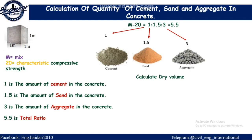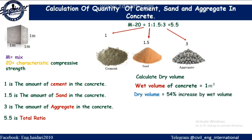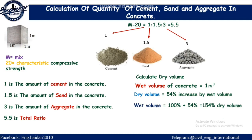Calculate dry volume. Wet volume of concrete = 1 cubic meter. Dry volume is 54% more than wet volume: wet volume × (100% + 54%) = 154%, therefore dry volume = 1.54 cubic meters.